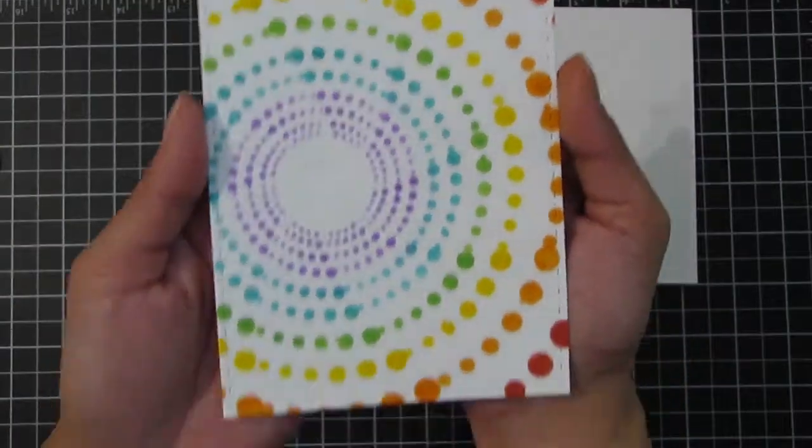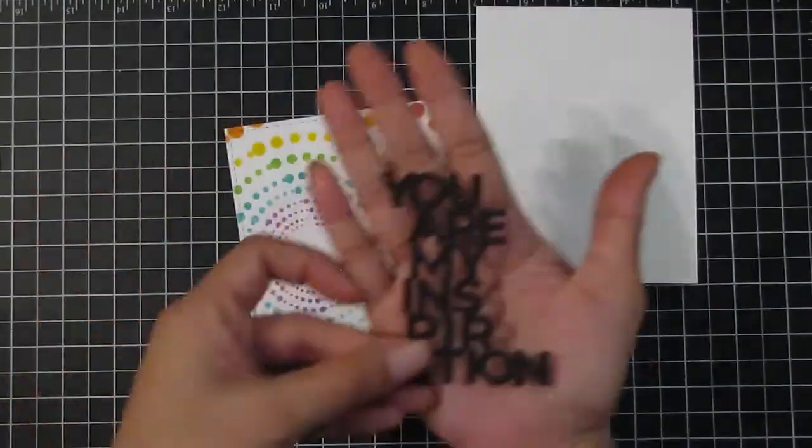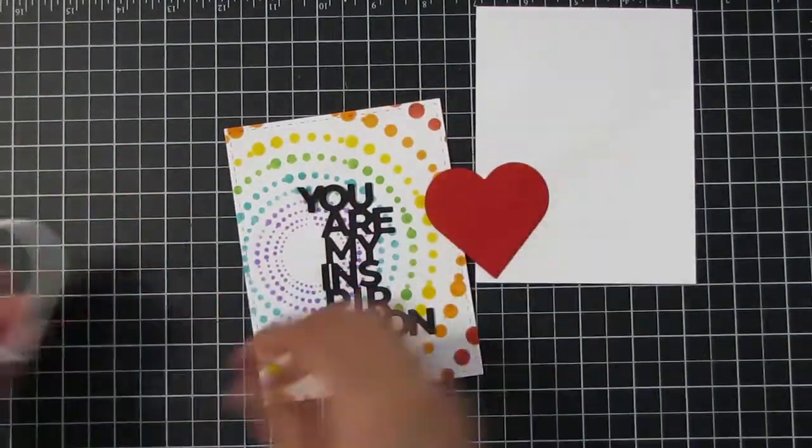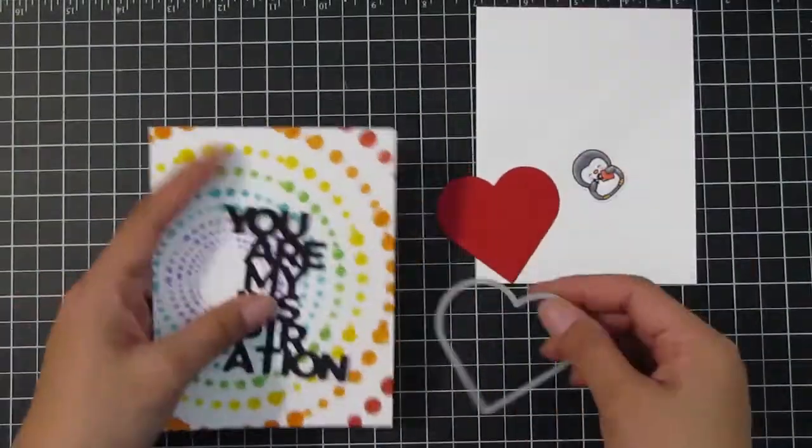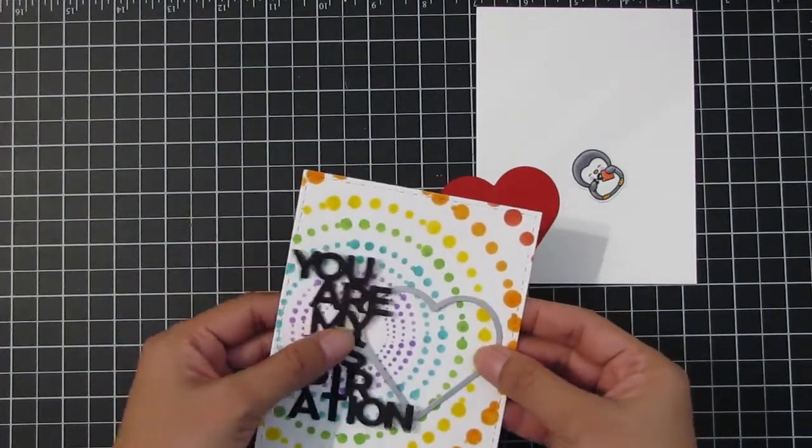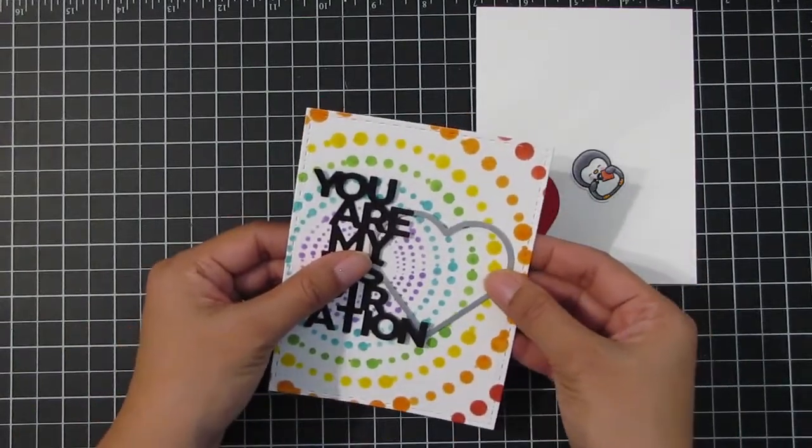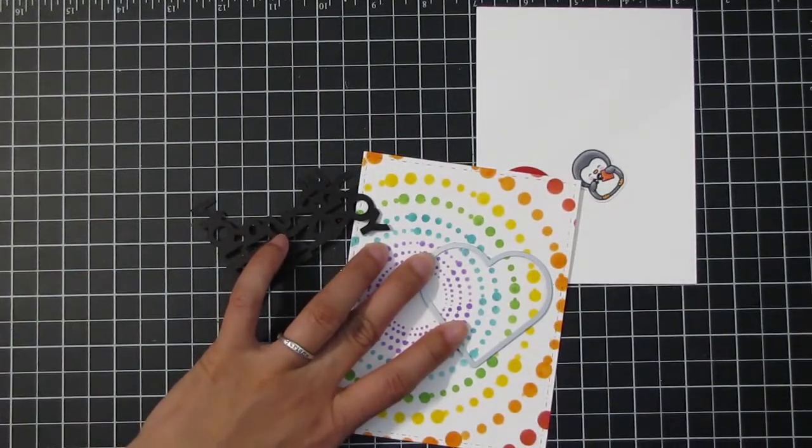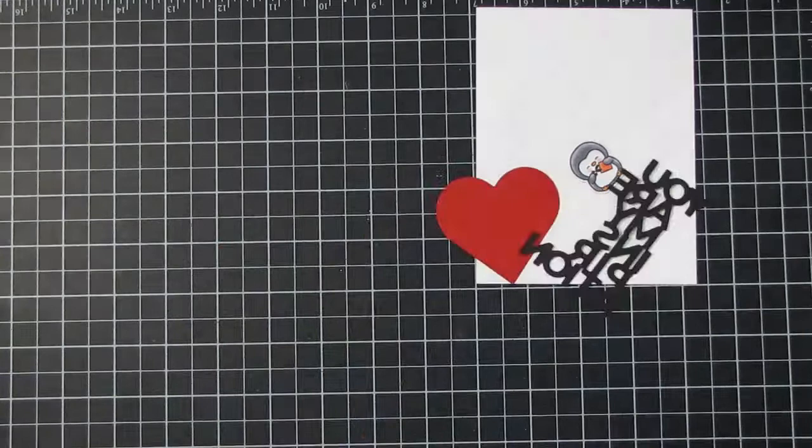Let's put the card together. That's my base, A2 size, four and a quarter by five and a half. You can see I cut out the stenciled portion not centered but off to the right. I cut it with the Dots Meet Dashes die, and I used the larger die of the rectangles.